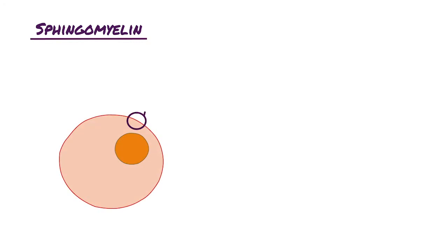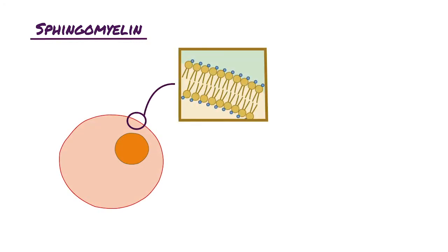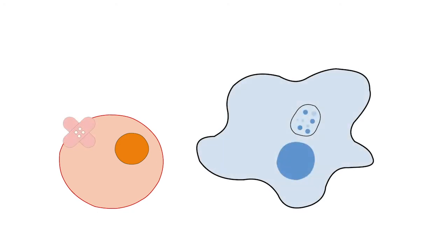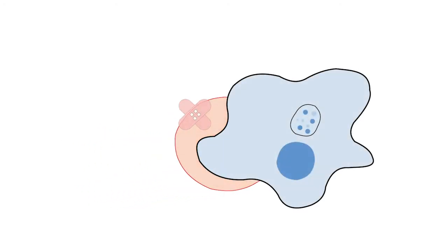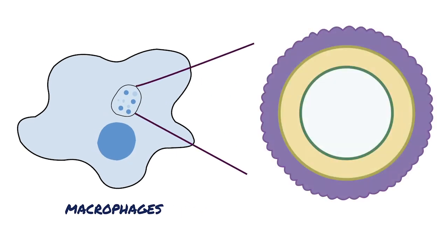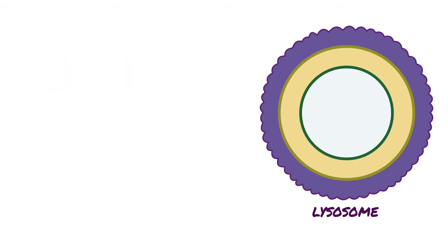Sphingomyelin is a ubiquitous component of cellular and organellar membranes. When cells become old or damaged, they are often phagocytized or eaten by macrophages, which are cells of the immune system. Macrophages contain organelles called lysosomes that function as recycling centers because they break down large, potentially harmful substances to be reused by the body.